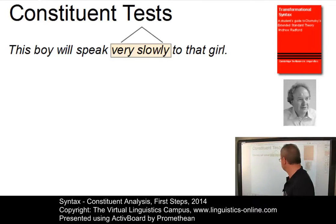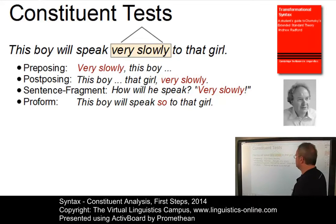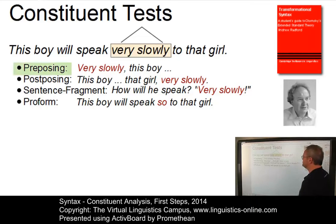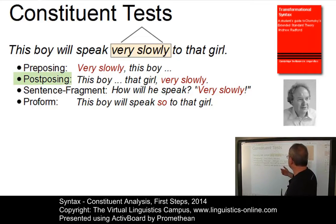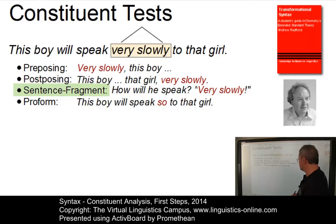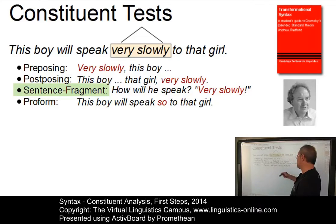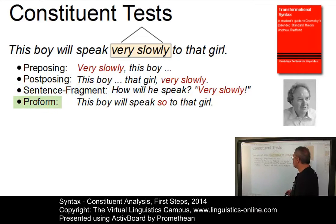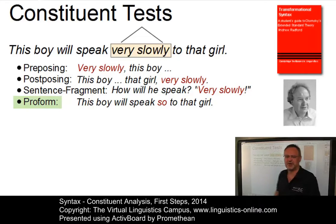Let's quickly outline the reasons for our decision. We said that we can pre-pose it: 'very slowly this boy will speak to that girl.' Or we can post-pose it: 'this boy will speak to that girl very slowly.' We can use 'very slowly' as a sentence fragment — 'How will he speak? Well, very slowly.' And last but not least, we can use a pro-form, namely 'so,' to replace 'very slowly': 'this boy will speak so to that girl.'